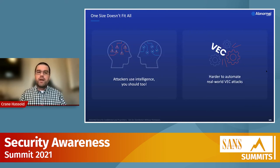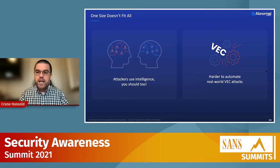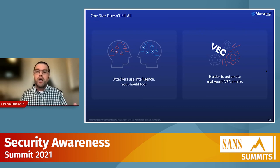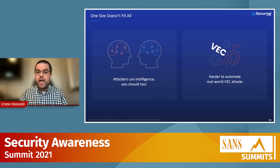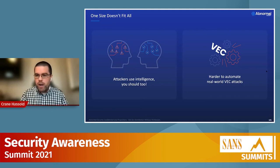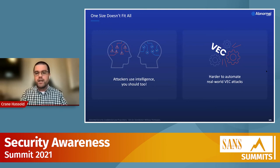It's also really important to keep in mind that one size doesn't fit all. From a BEC perspective — especially with vendor email compromise attacks — these cybercriminals are using intelligence based on real-world interactions. Effective BEC security awareness training should also incorporate that intelligence a cybercriminal might be using to socially engineer your users. It's much harder to automate real-world BEC attack simulations than credential phishing or malware campaigns, so you have to put more work in to make that training effective.